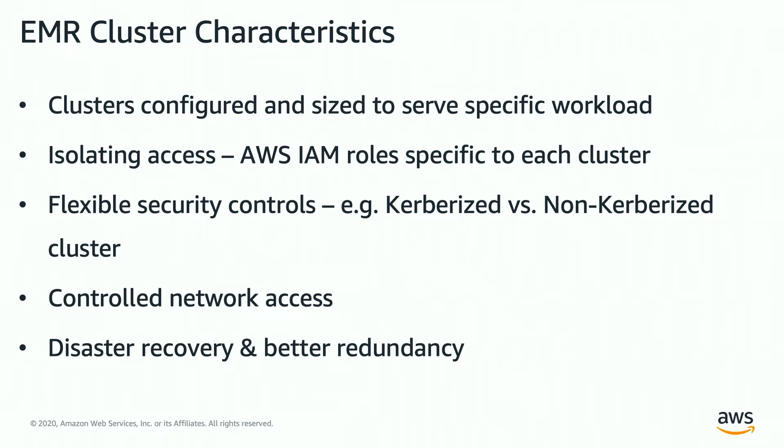Similarly, for disaster recovery and data redundancy, you can have multiple clusters using S3 as your storage and isolating your metastore outside of the cluster. If you lose your cluster, you're not losing your data because it still stays in Amazon S3. This also helps with disaster recovery — for example, you can have one cluster in one region and another cluster for DR, so if you lose your cluster or region, you still have the same data replicated in a different region.